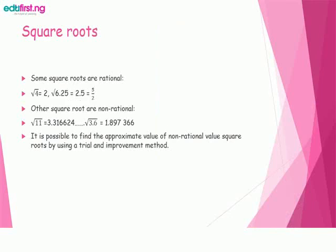Now let's move on to square roots. Some square roots are rational numbers. For example, square root of 4 equals 2, square root of 6.25 equals 2.5, and the fraction is equal to 5/2. Other square roots are not rational.